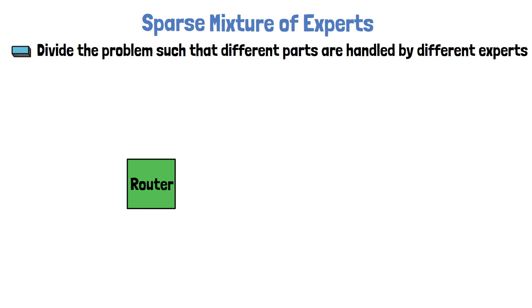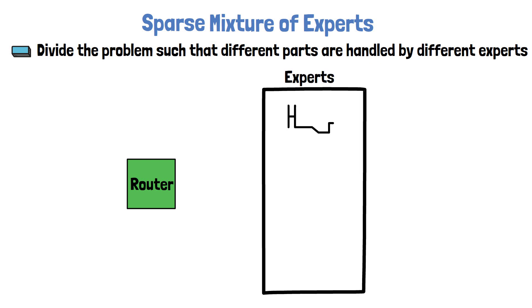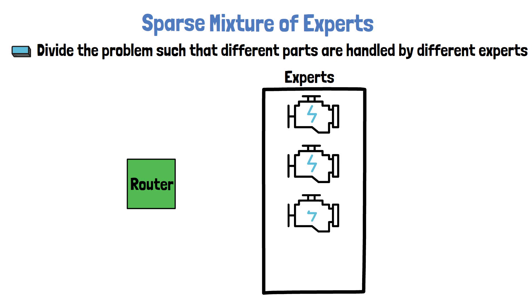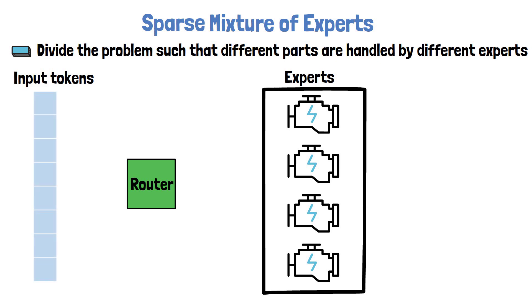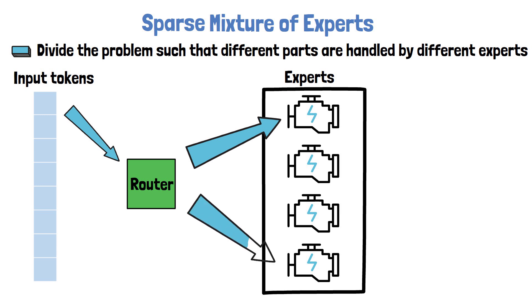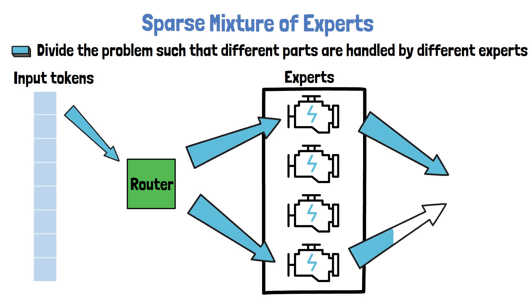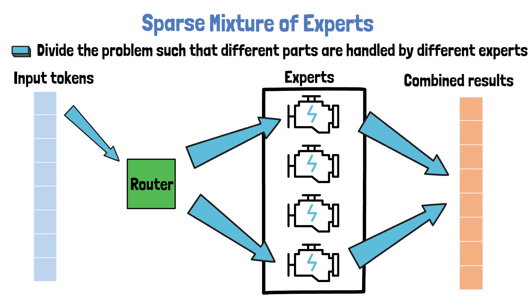In each layer we have a Router component and an Expert component, where the Expert component is comprised of multiple distinct experts, each with its own weights. Given input tokens, each token passes via the Router, and the Router decides which expert should handle that token and routes the token to be processed by that expert. More commonly the Router chooses more than one expert for each token — in this example we choose 2 experts out of 4 — and the chosen experts yield outputs which we combine together. These experts can be smaller than a single large model processing all tokens, and they can run in parallel, which is why the computational cost is reduced.